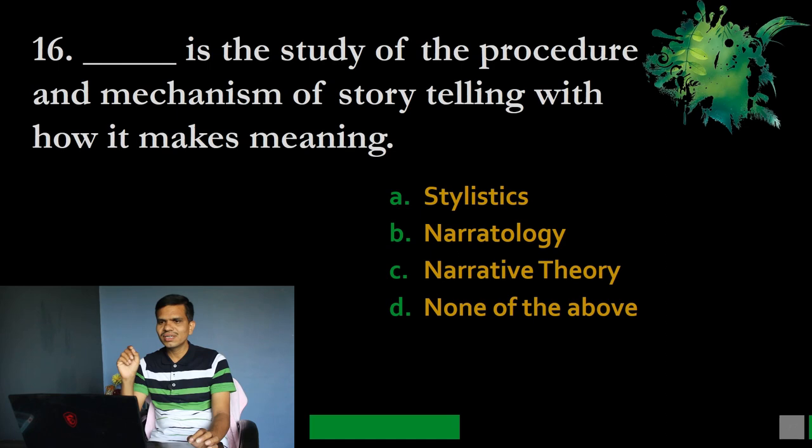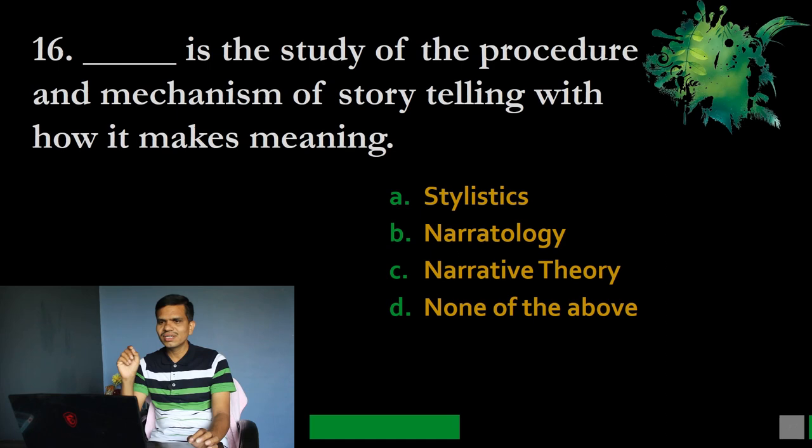Question number 16: Dash is the study of the procedure and mechanism of storytelling and how it makes meaning. Options: A. Stylistics, B. Narratology, C. Narrative Theory, D. None of the above. The correct option is B, Narratology. Narratology is simply the science of storytelling in which you study different aspects of storytelling — the procedure, how meaning is created, what kind of language is used. It is a very popular field nowadays.